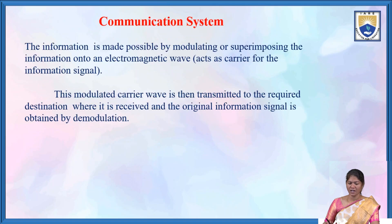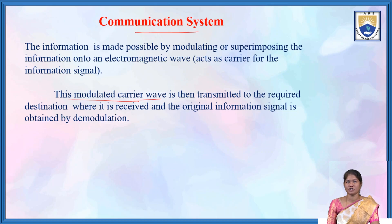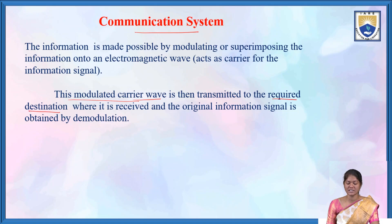In a communication system, transmission is made possible by modulating or superimposing the information onto an electromagnetic wave that acts as a carrier for the information signal. This modulated carrier wave is then transmitted to the required destination, where the original information signal is recovered by demodulation.